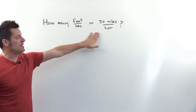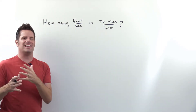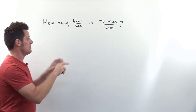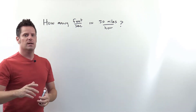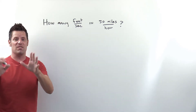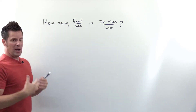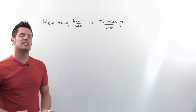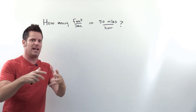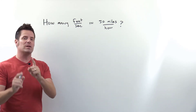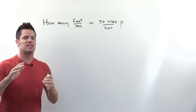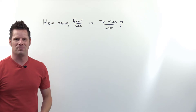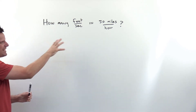How many feet per second are there in 50 miles per hour? We've got 50 miles per hour and we need to convert that into feet per second. This is a unit analysis, dimensional analysis, unit conversion problem. We're going to follow my six magical steps that I discussed in a dimensional analysis video earlier, linked in the description below.